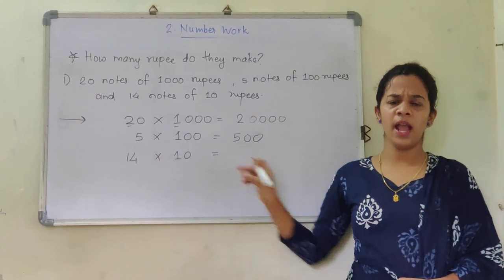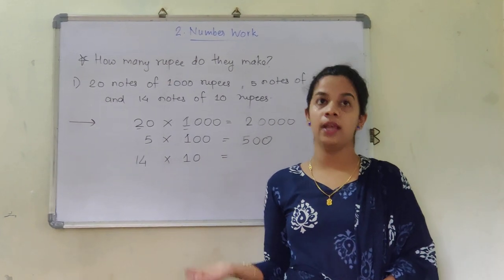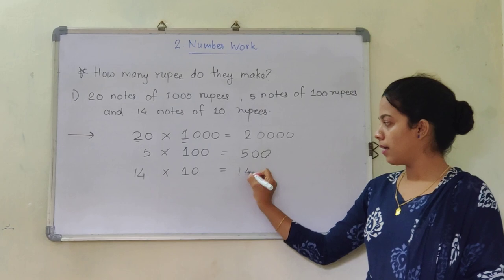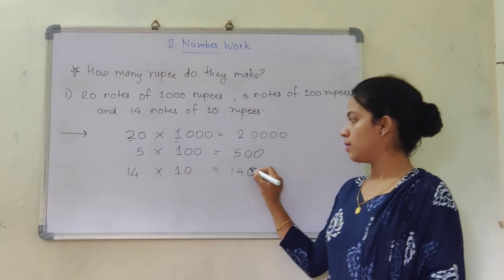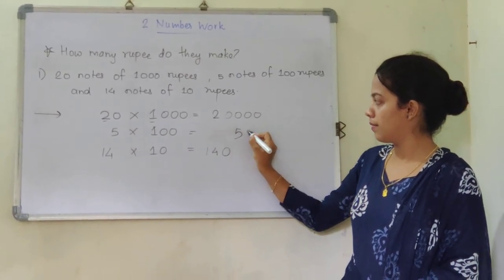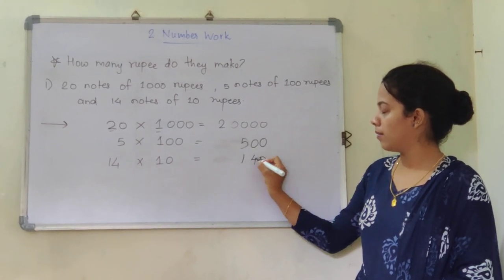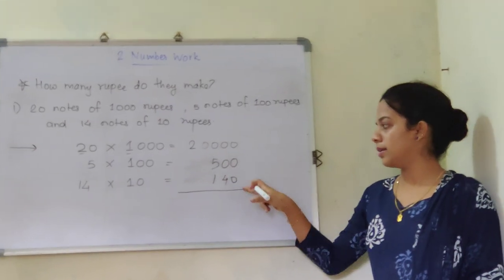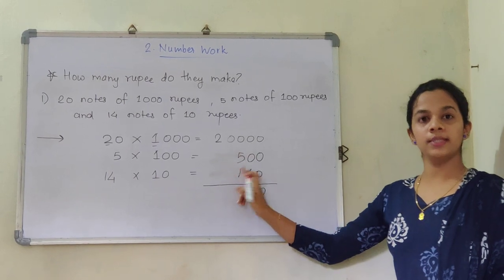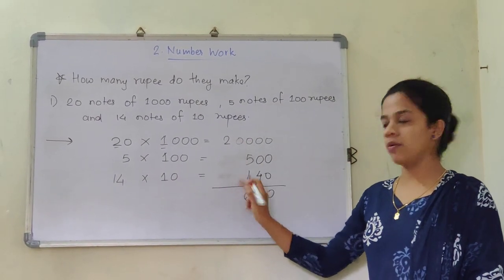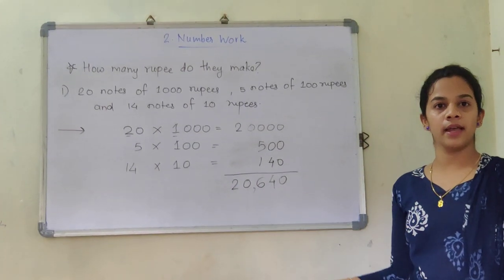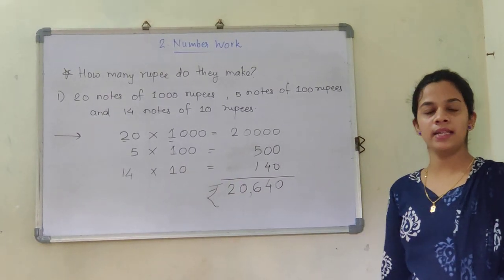Now 14 into 10. Any number into 10 — 2 into 10 is 20, 3 into 10 is 30, 11 into 10 is 110. So 14 into 10 is 140. Now I am going to add them: 20,000 plus 500 plus 140. Adding column by column: 0 plus 0 plus 0 is 0, 0 plus 0 plus 4 is 4, 5 plus 1 is 6, 0, and 2. So the total rupees they have made is 20,640.